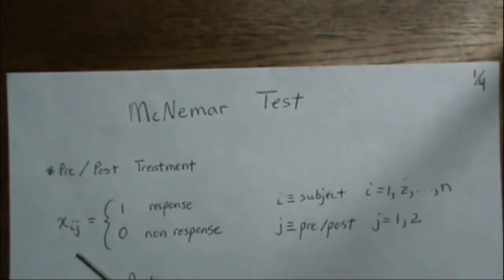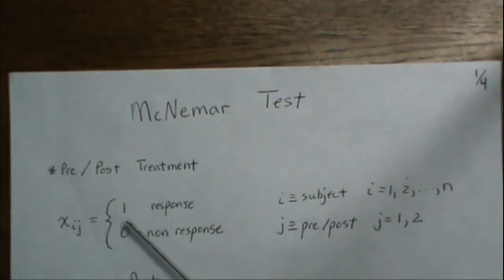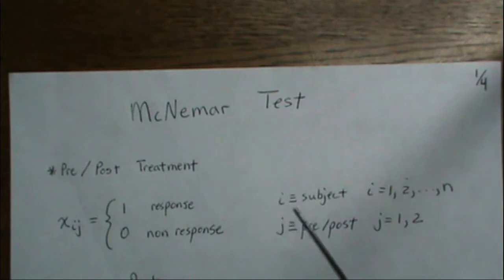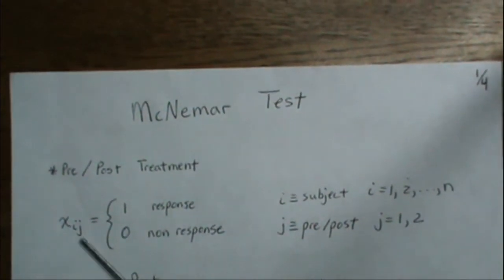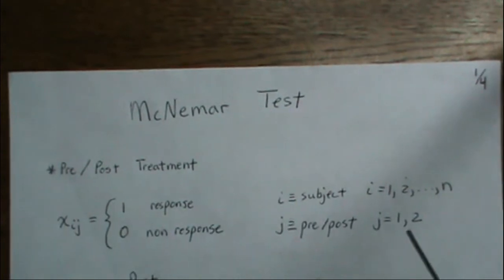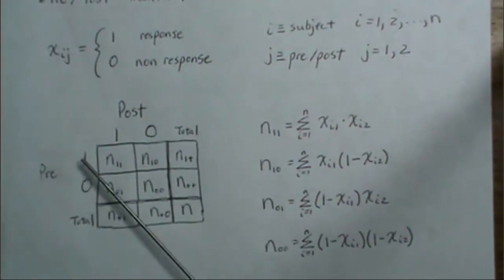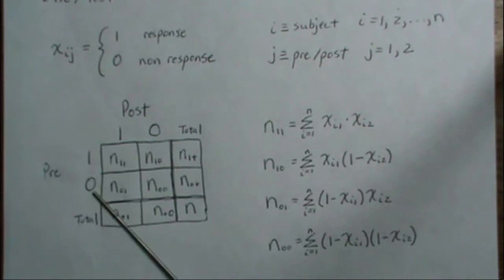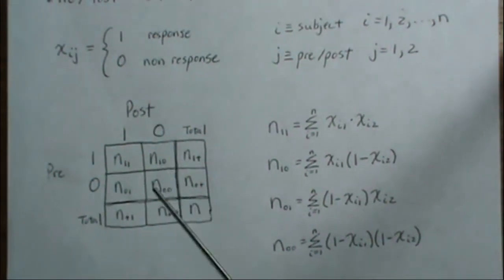We can represent this where each person contributes an X_i,j — either one for response or zero for non-response. The i is which subject we're looking at, so it goes from one to N, and j is their pre or post measurement. This can be put in a contingency table where the pre-value is either one or zero and the post is either one or zero, fitting into one of four categories.